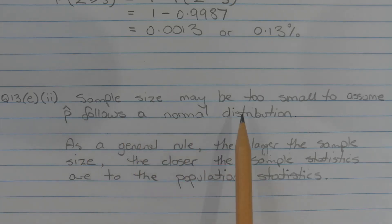The sample size may be too small to assume that P hat follows a normal distribution. As a general rule, the larger the sample size, the closer the sample statistics are to the population statistics.